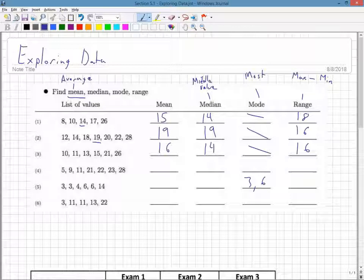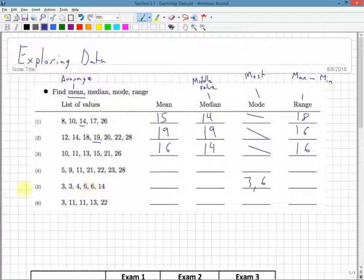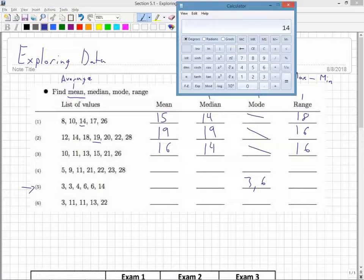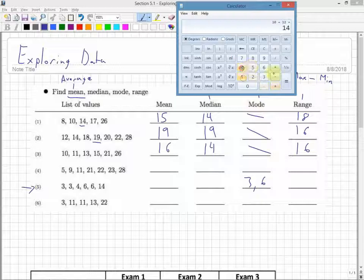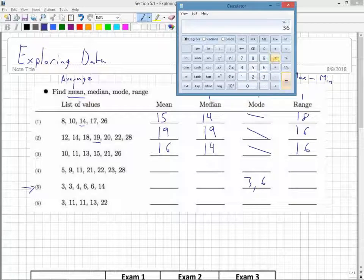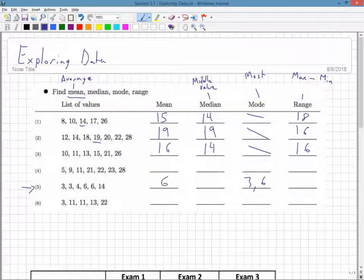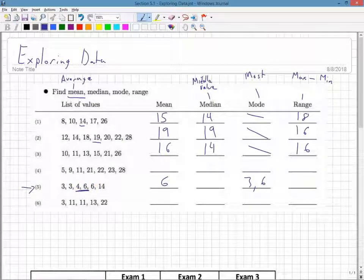Let's do this one. It has an even number again. I have 3 plus 3 is 6, plus 4 is 10, plus 6 plus 6 which is 12, plus 14, which is 36. I divide by how many there are - 1, 2, 3, 4, 5, 6 - and get 6 for my mean. My median is the middle value: 1, 2, 3, 4, 5, 6. It's these two here, because we get two before and two after. 4 plus 6 is 10, divided by 2 is 5. The range is 14 minus 3, which is 11.